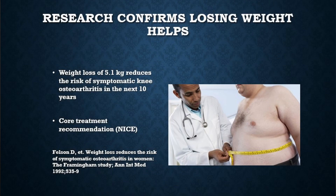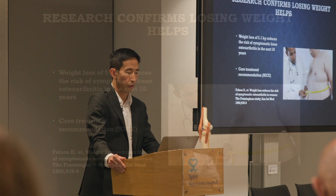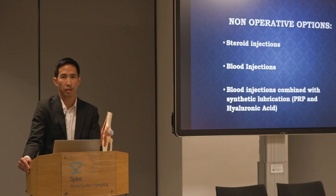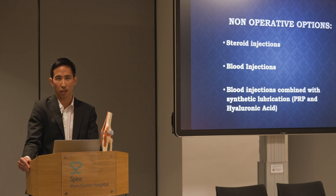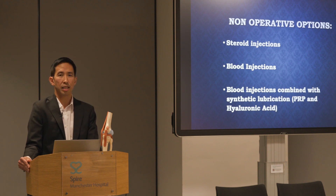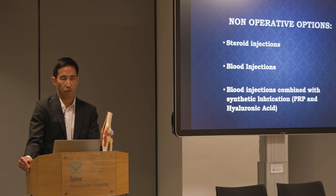Probably the hardest non-operative treatment is weight loss, but research has shown that even a modest amount can significantly improve symptoms. Knee injections are useful tools because they help you buy time. Steroid injections reduce inflammation and irritation around the joint. Similarly, blood injections — platelet-rich plasma injections — can help reduce symptoms. The most recent research supports the use of a combination of blood injections and synthetic lubricants, referred to as hyaluronic acid injections, which can be helpful in early management of knee osteoarthritis.